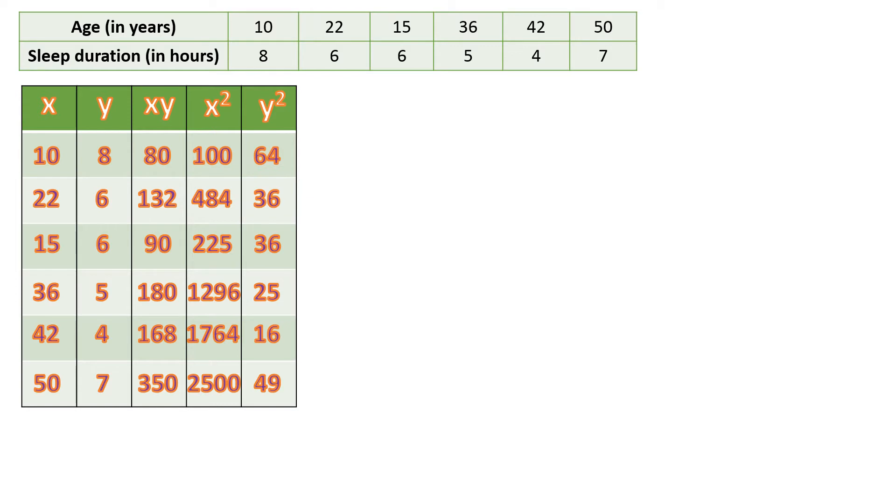Next, we're going to get the sum of X. The sigma symbol means sum or summation. We're going to get the total of the X variable: 10, 22, 15, 36, 42, and 50. The sum is 175. Then get the sum of Y, add all numbers in the Y column. The sum will be 36.